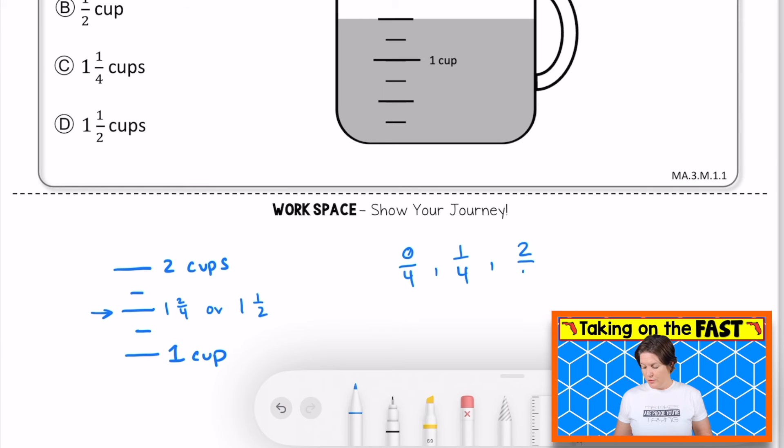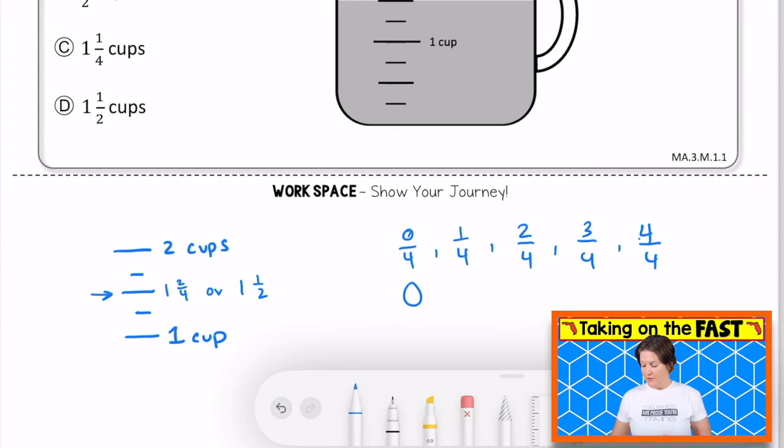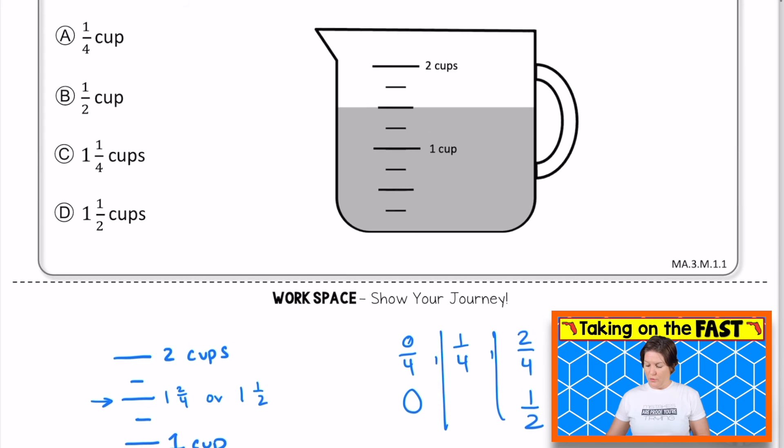Zero fourths, one fourth, two fourths, three fourths, or the next whole, so we'll say four fourths. This is the same thing as zero. This is the same thing as one, and two fourths would be the same thing as what? It's equivalent to one half. So all of these right here would be to the nearest quarter.